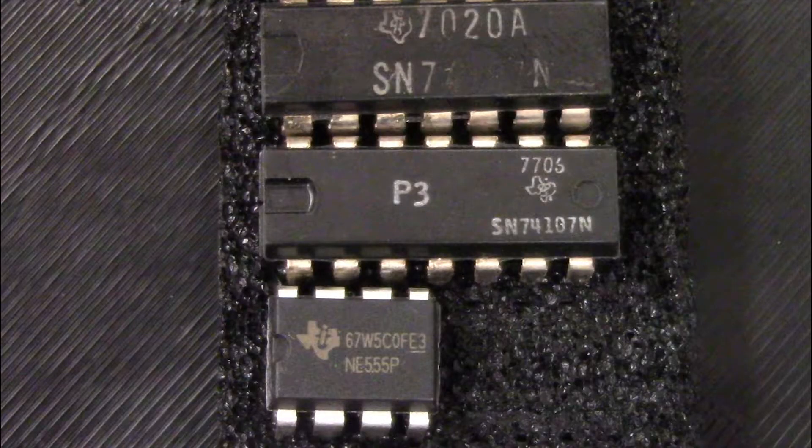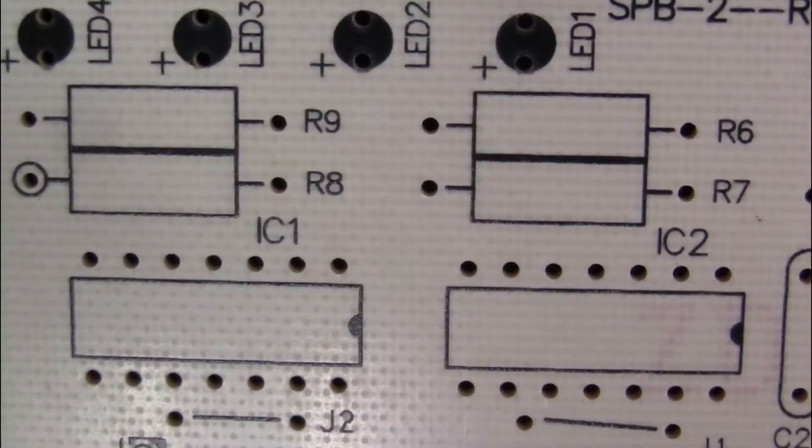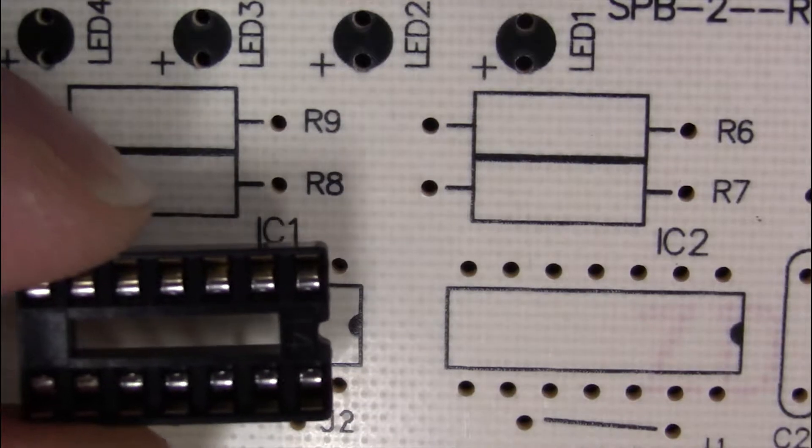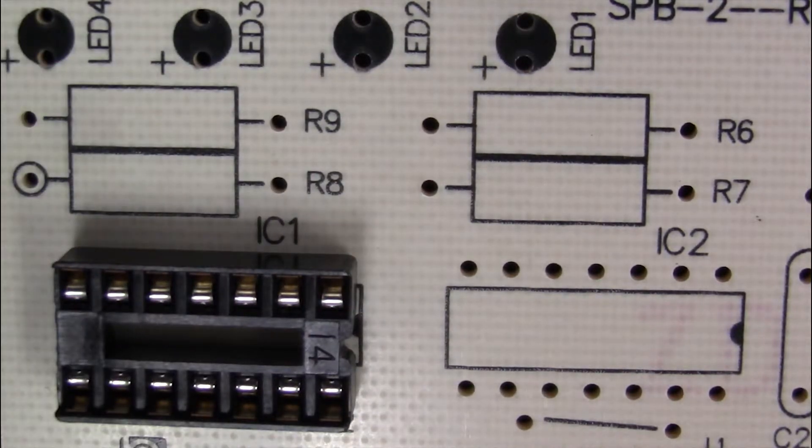The ICs do have an orientation, but you will not solder the IC chips directly to the board. Instead, you'll solder IC sockets that offer a convenient way to replace the ICs. The IC sockets do not have an electrical polarity, but the notch should line up with the outline on the PCB. This way there's no confusion in which way the ICs need to go.